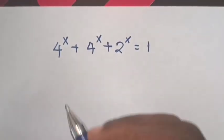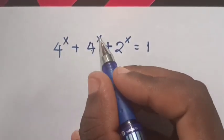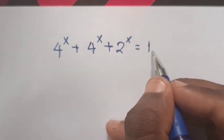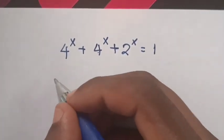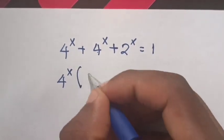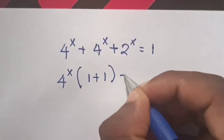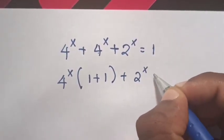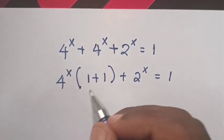How to find the value of x from 4 power x plus 4 power x plus 2 power x equals 1. From 4 power x, two of them are common, giving us the bracket 1 plus 1 plus 2 power x equals 1.